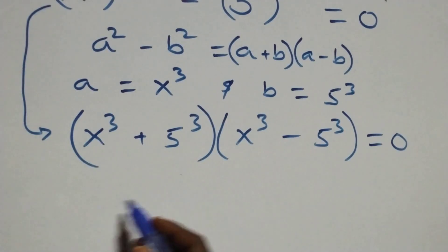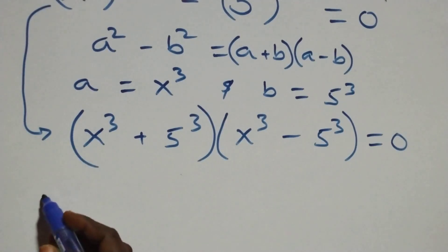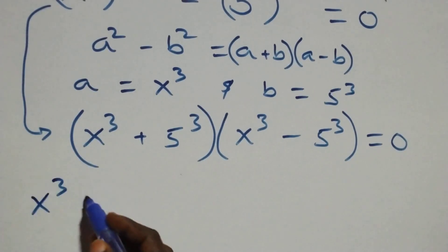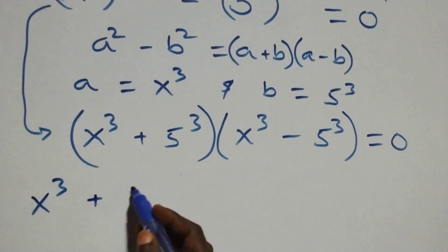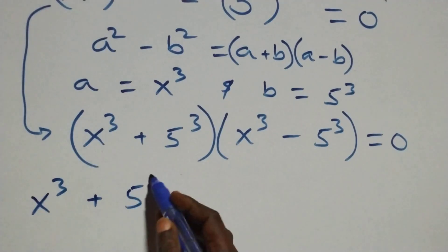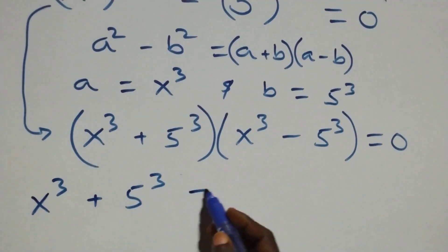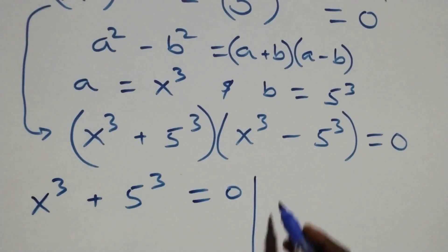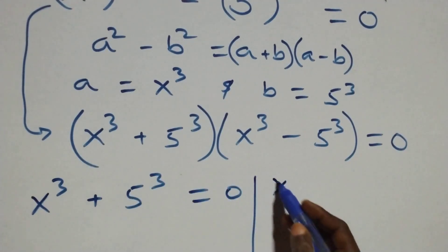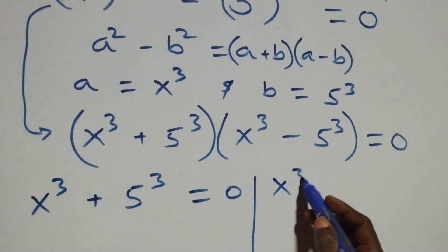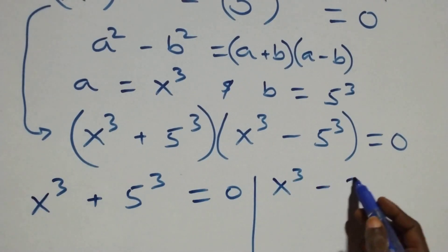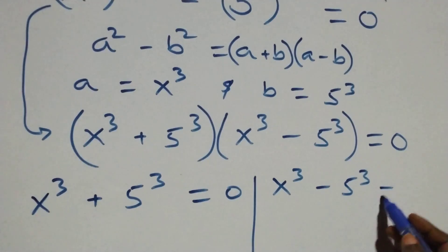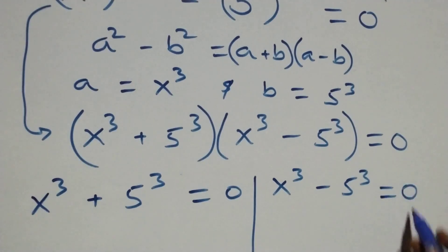Here we have two possible cases. The first one: x raised to power 3 plus 5 raised to power 3 equals to 0, or we have x raised to power 3 minus 5 raised to power 3 equals to 0.